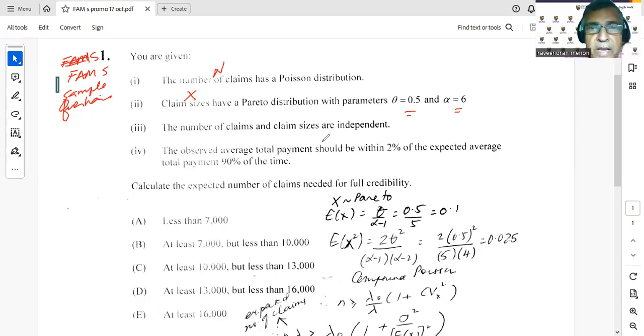The number of claims and claim sizes are independent. The observed average total payment should be within 2% of the expected average total payment.